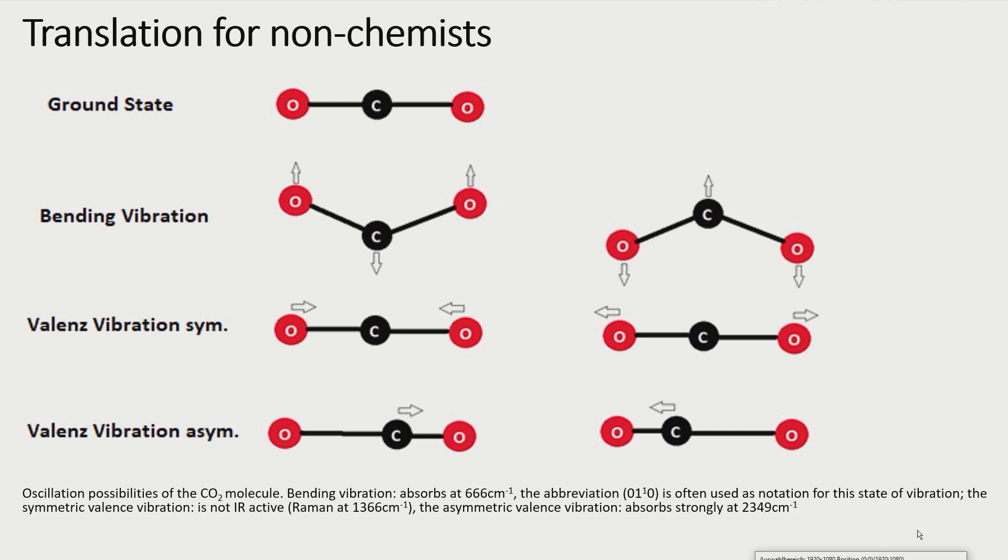The elastic properties of the bonds allow the molecule to perform bending vibrations and stretching vibrations. Stretching vibrations are also called valence vibrations. Of all the possible vibrational modes of CO2, the bending vibration and the asymmetric valence vibration can be excited by infrared light.